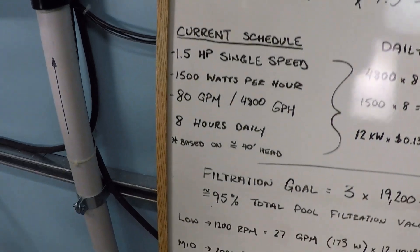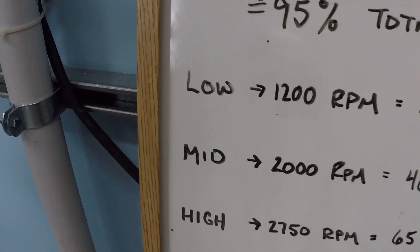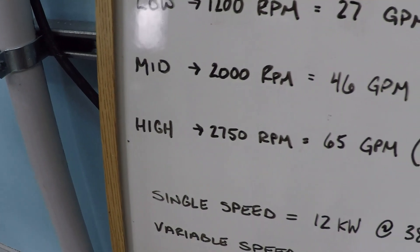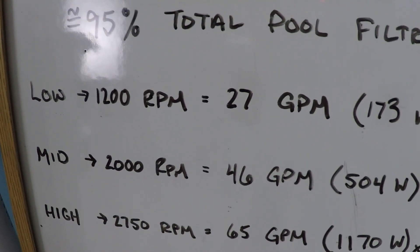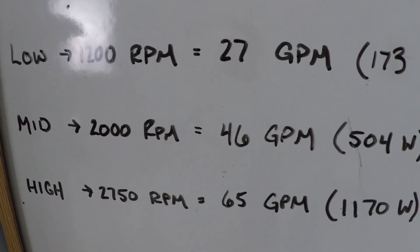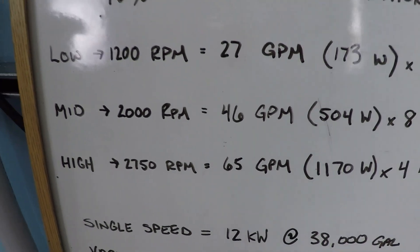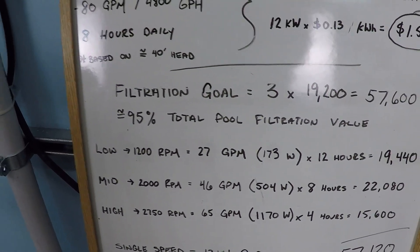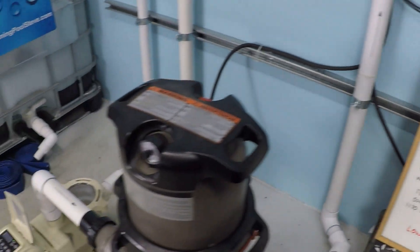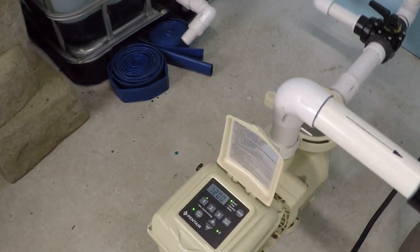In terms of this pump, what we're able to experience with low, medium, and high speed RPM is 27 gallons per minute, 46 gallons per minute, and 65 gallons per minute. It's important that you see that these are real world numbers. So let's take a look at the system running now.